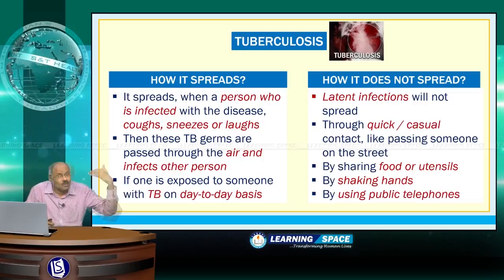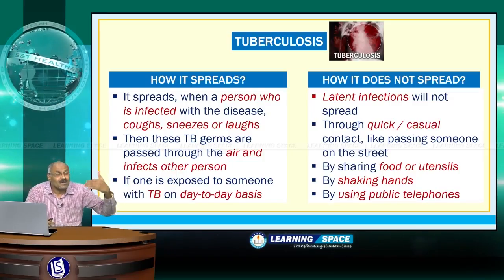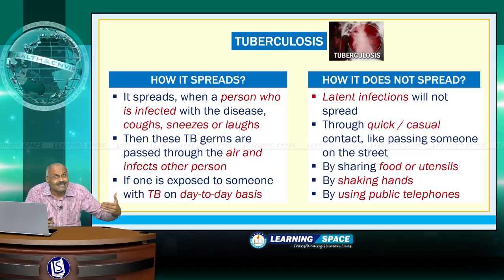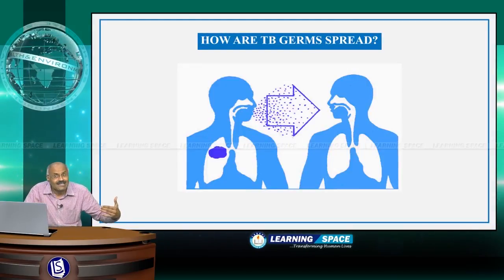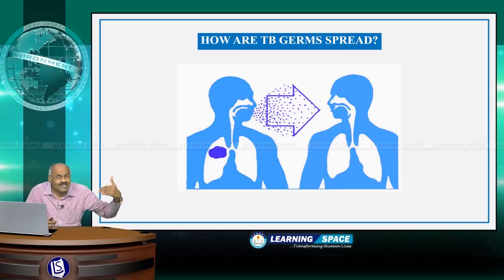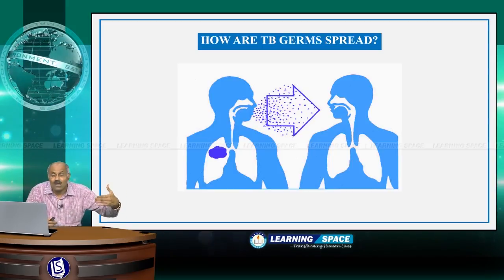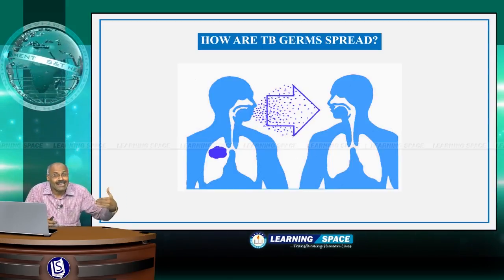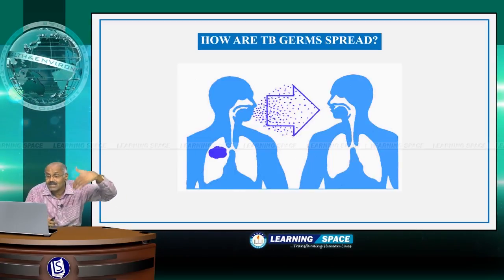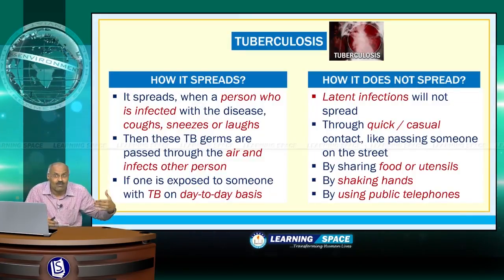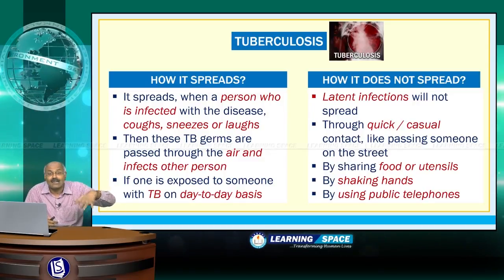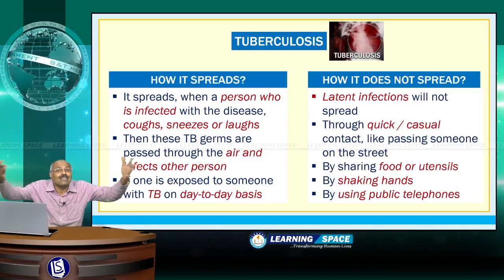Tuberculosis spreads when a person infected with the disease coughs, sneezes, or laughs — the tuberculosis germs are passed through the air and infect another person. Also, if one is exposed to someone with tuberculosis on a day-to-day basis, these germs will spread.